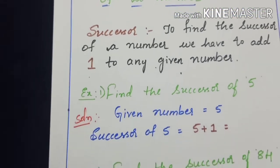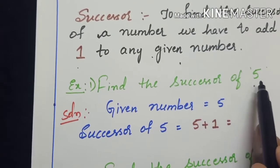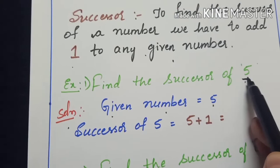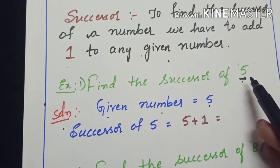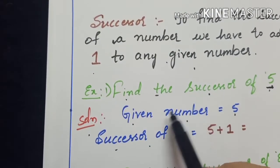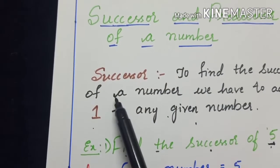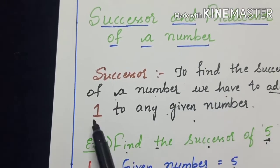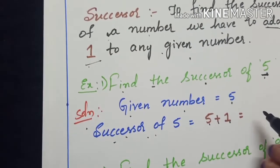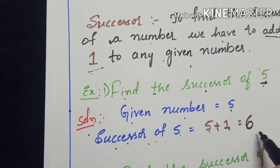For example, find the successor of 5. The given number is 5. To find the successor, according to the rule, we have to add 1. So successor of 5 equals 5 plus 1, which is 6. So the successor of 5 is 6.